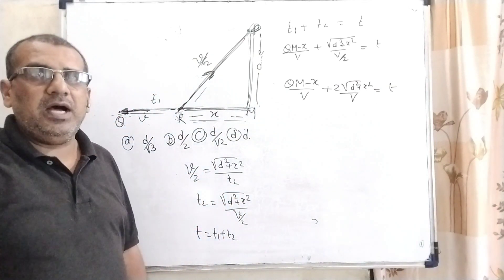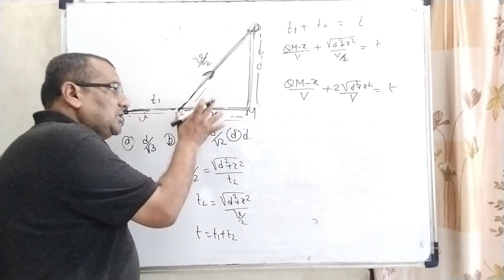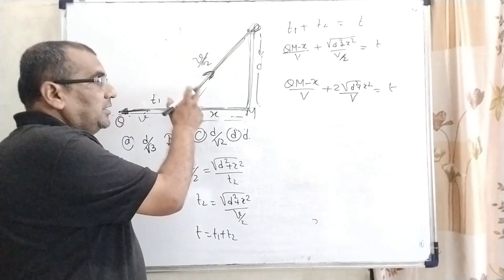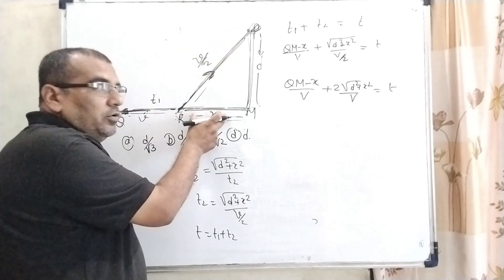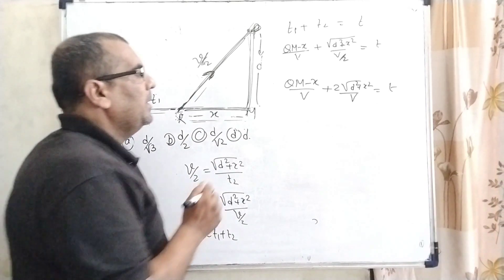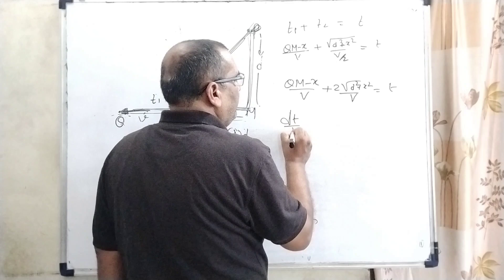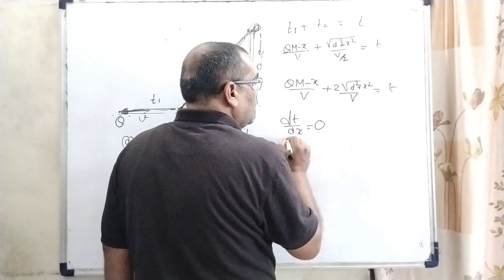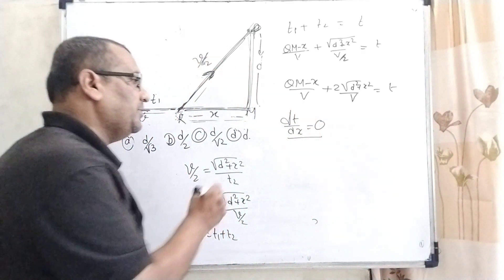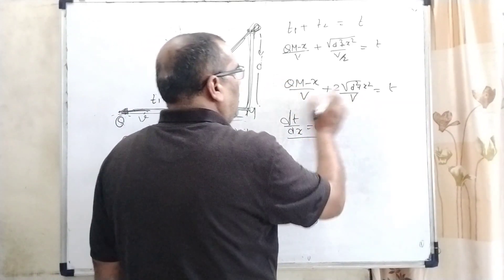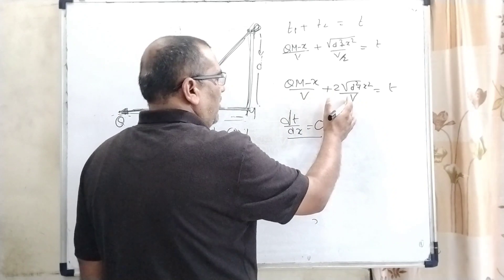But in this question, we have to find what is the distance RM when it reaches in minimum time, which means time depends on the value x. So therefore, we have to differentiate this T with respect to x and that equals 0, because for the maxima-minima concept we are using dT by dx equals 0. So differentiate with respect to x.